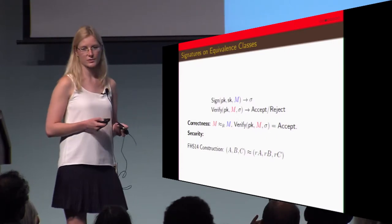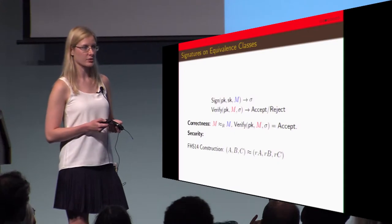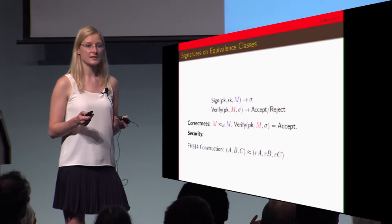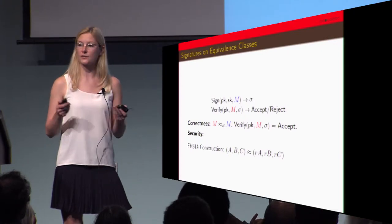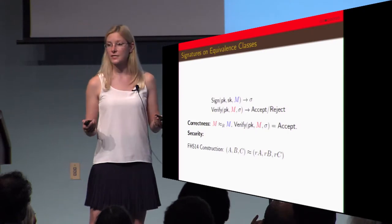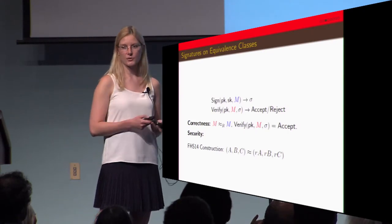There are some very nice results in this paper. They were able to show a result about class hiding, which means that the adversary is unable to tell if two messages are in the same equivalence class. They show that if and only if the DDH assumption holds you get class hiding.